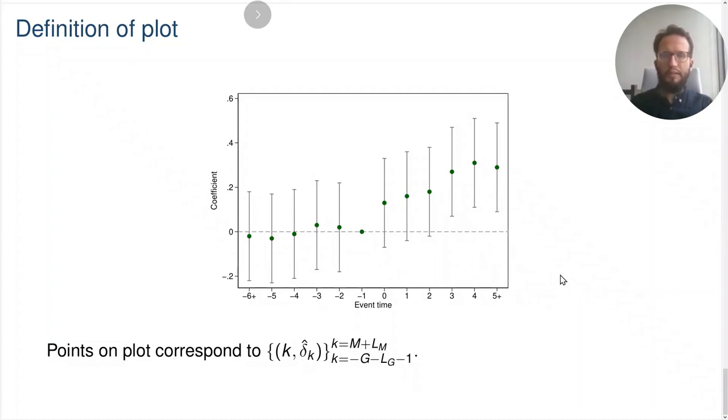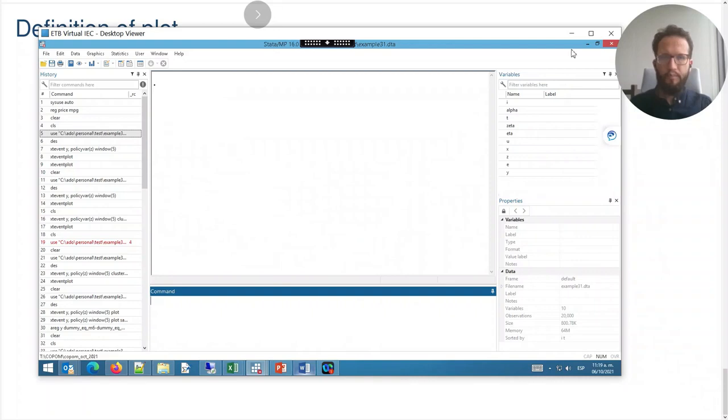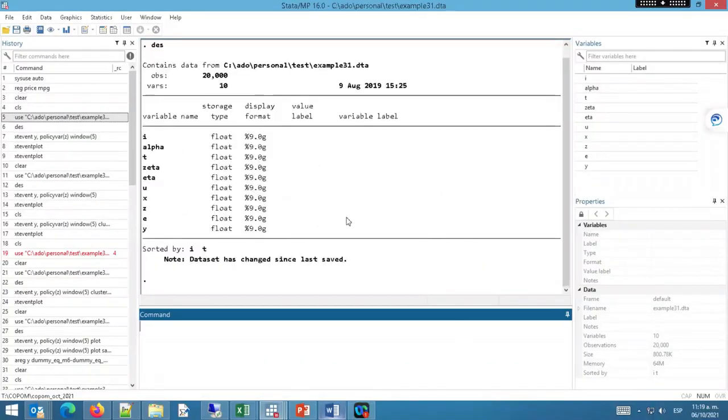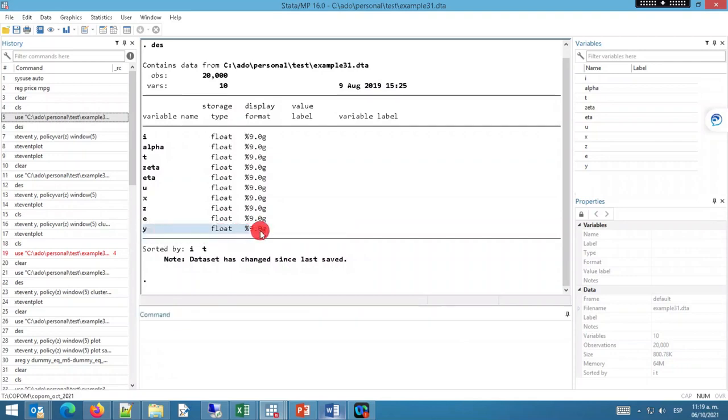Now, let me turn to Stata to give you an example of how to build an event study plot using the Stata command xtevent. What I have here is an example data set that has all of the components for the linear panel event study. We have an outcome variable of interest y, a policy variable of interest z, units i, and time t. Let me remind you that to install the command xtevent, you can just type ssc install xtevent.